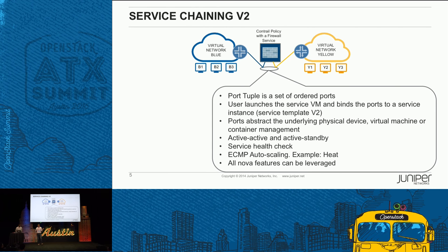To support that, we have a concept of service health check. As you're creating multiple chains, if one of the firewall instances is not working fine, traffic stops going through, but you're not able to detect it because the VM is still up and running. So we have a health check you can configure to ping or do a URL GET to see if the service is actually up. If not, we bring the route preference down and the other chain goes active.